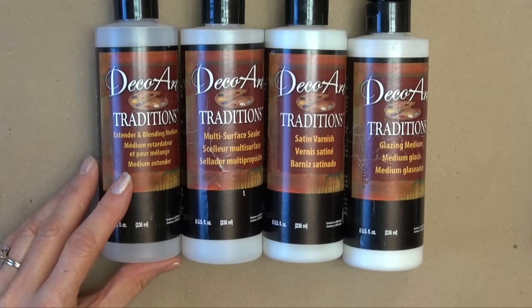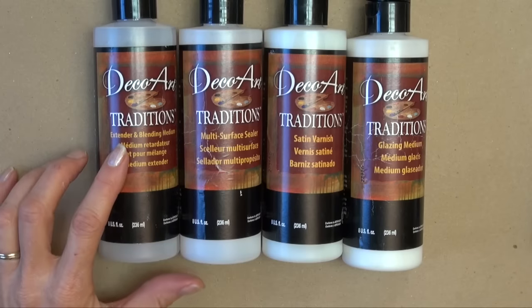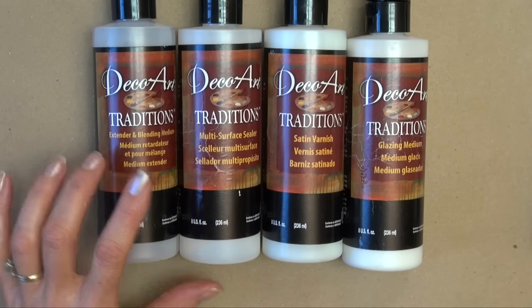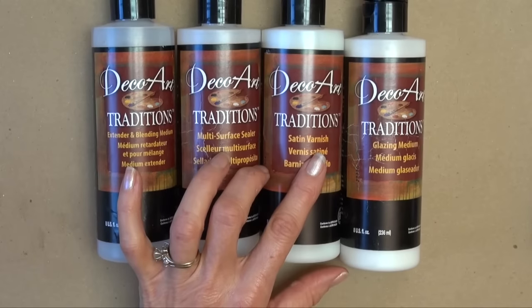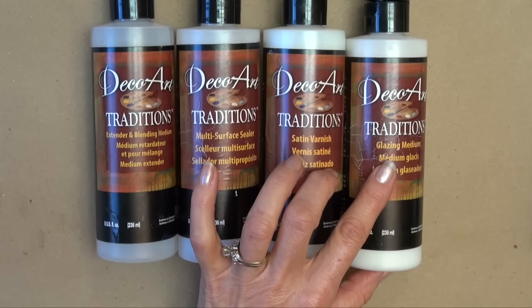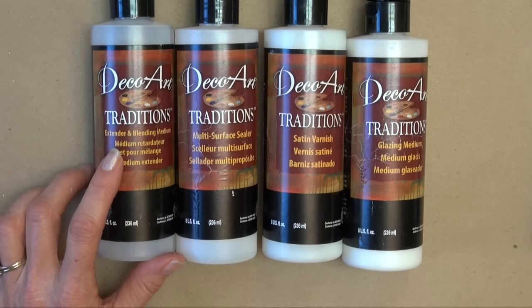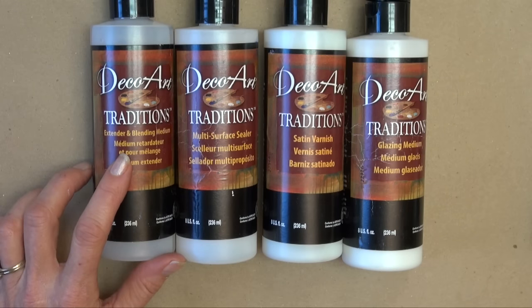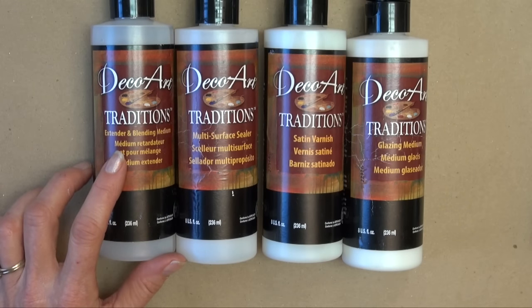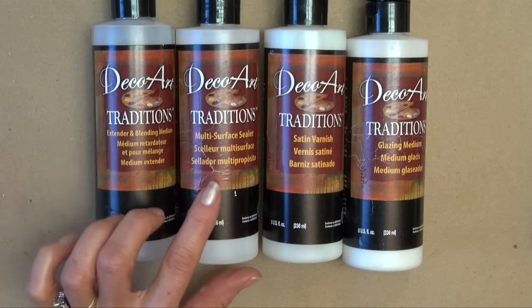There's four mediums in the line of traditions. We've got extender and blending medium, multi-surface sealer, satin varnish, and glazing medium. Extender medium is used to extend the open time of the paint to enable the artist to blend colors together. It can also be used for antiquing and a variety of other techniques.